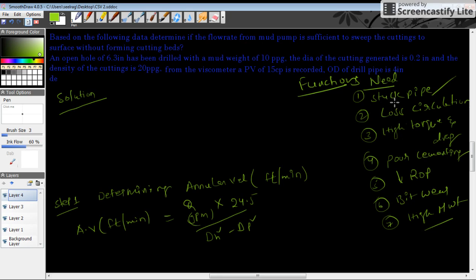First is stuck pipe. Cuttings deposition makes stuck pipe an issue. Loss circulation due to annular mud weight - increase in annular mud weight means more hydrostatic pressure, which in turn affects the formation and may cause the formation to break. This is also called loss circulation.